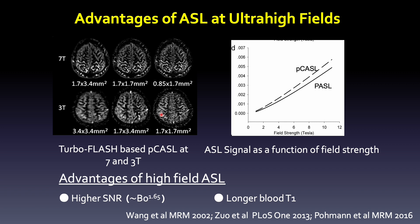Arterial spin labeling has dual benefit at ultra-high field with increased SNR, which scales super-linearly with B0, as well as prolonged blood T1. So when you shift from 3T to 7T, you're going to see a three-fold SNR increase. As a result, at 7T we can reach almost seven millimeters spatial resolution, while it is close to two millimeters at 3T.